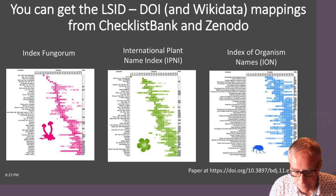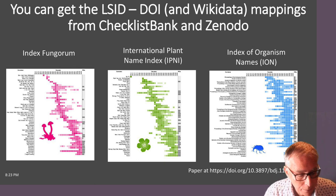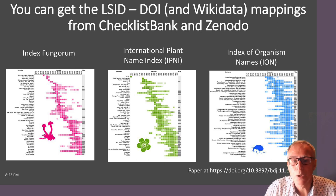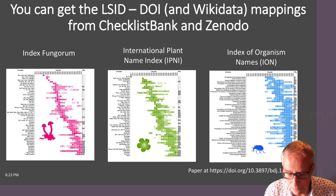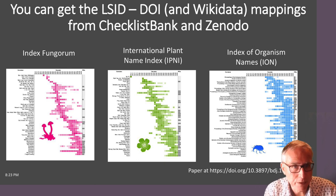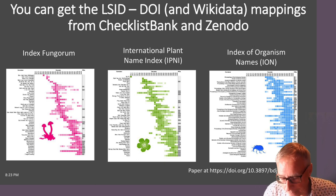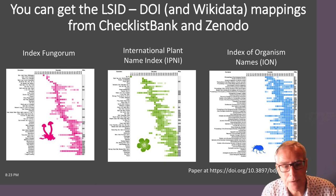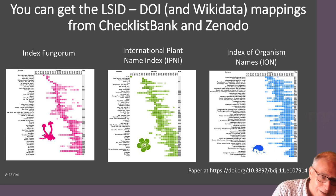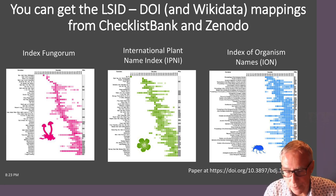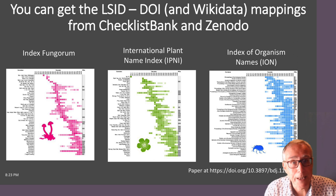If you want these mappings, they are available in Checklist Bank and also in Zenodo — there are DOIs for each of these mappings. There's lots of other things I could tell you about, like how literature coverage has changed over time and how that varies across the databases, but I don't have time. If you're curious, have a look at the paper — there's a DOI behind me, cleverly obscured — where you can read more about this project. Thank you very much for your time.